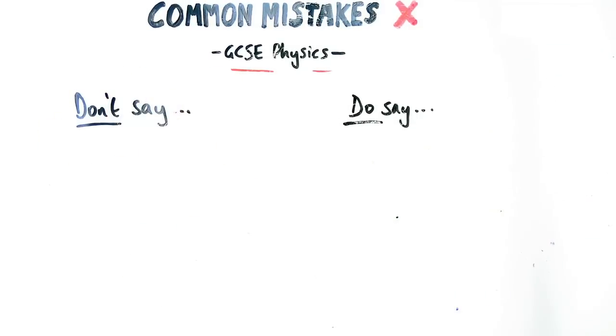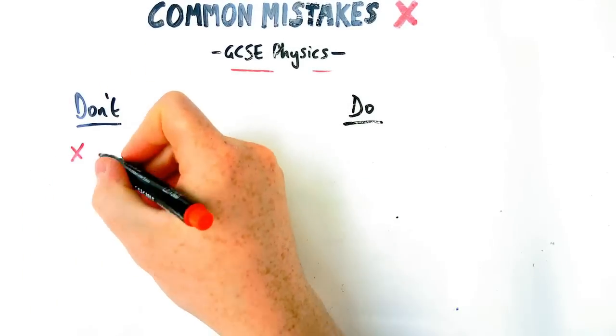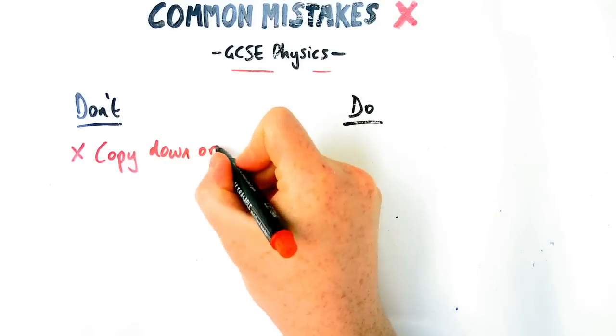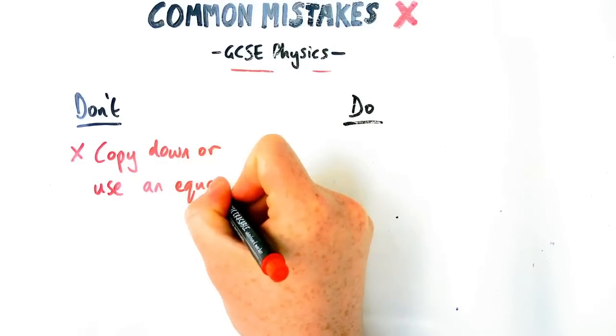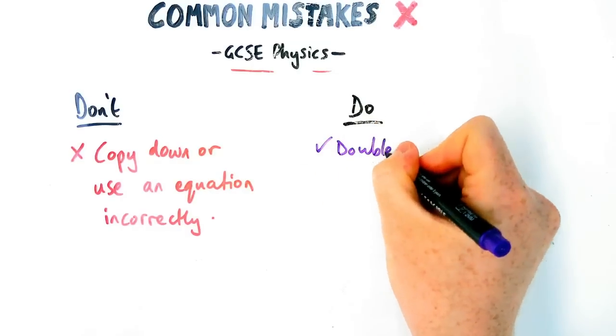The next thing we're going to talk about is another don't do something, but this time it's not don't say. It's going to be don't copy an equation incorrectly. So you should be getting the marks on 2024. You get the equation sheet. You shouldn't lose marks on copying the equation, but please be aware there are some equations that are tricky and you don't want to lose marks.